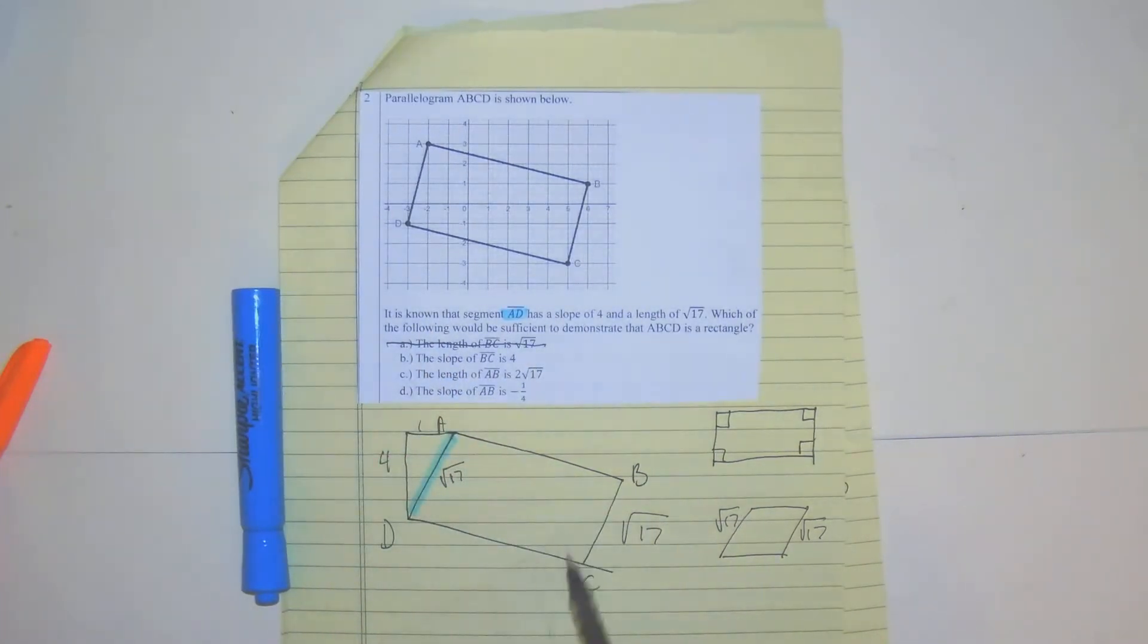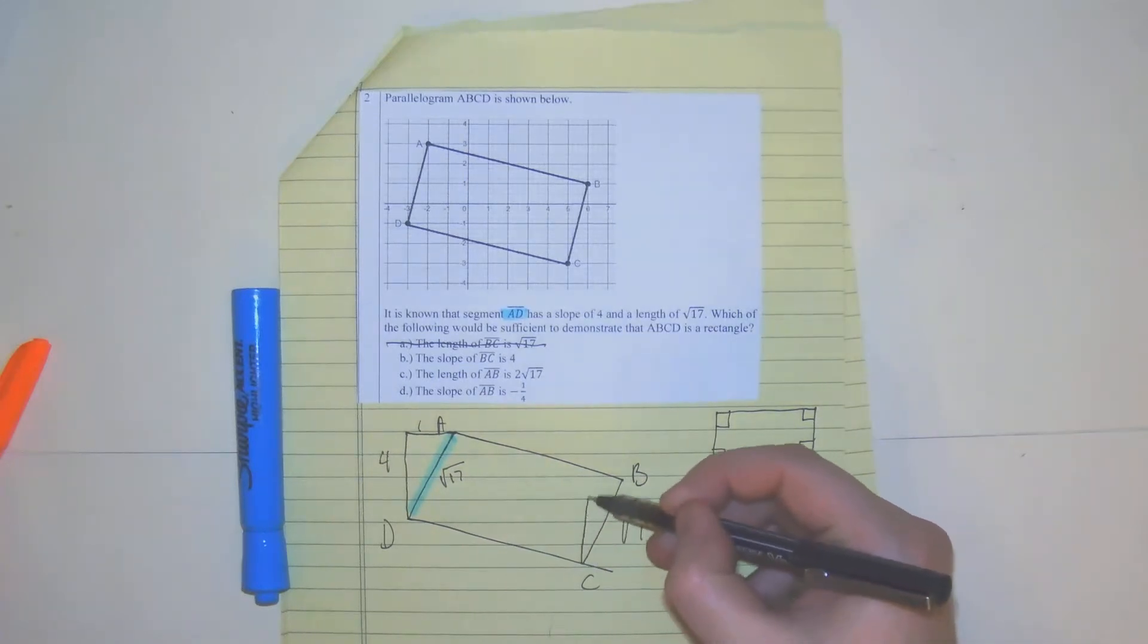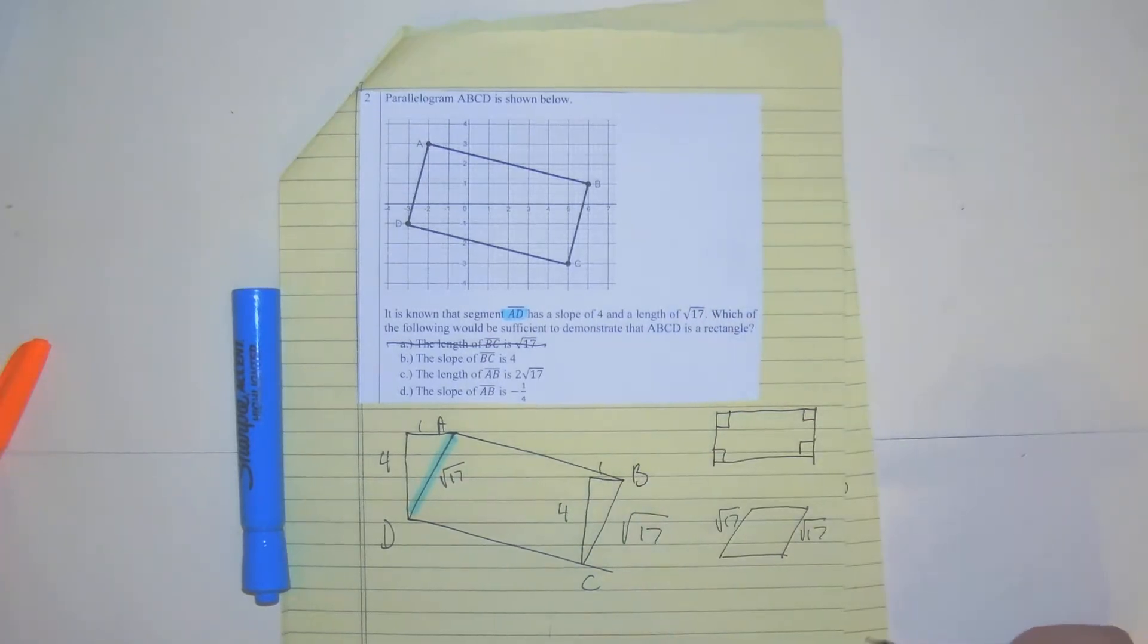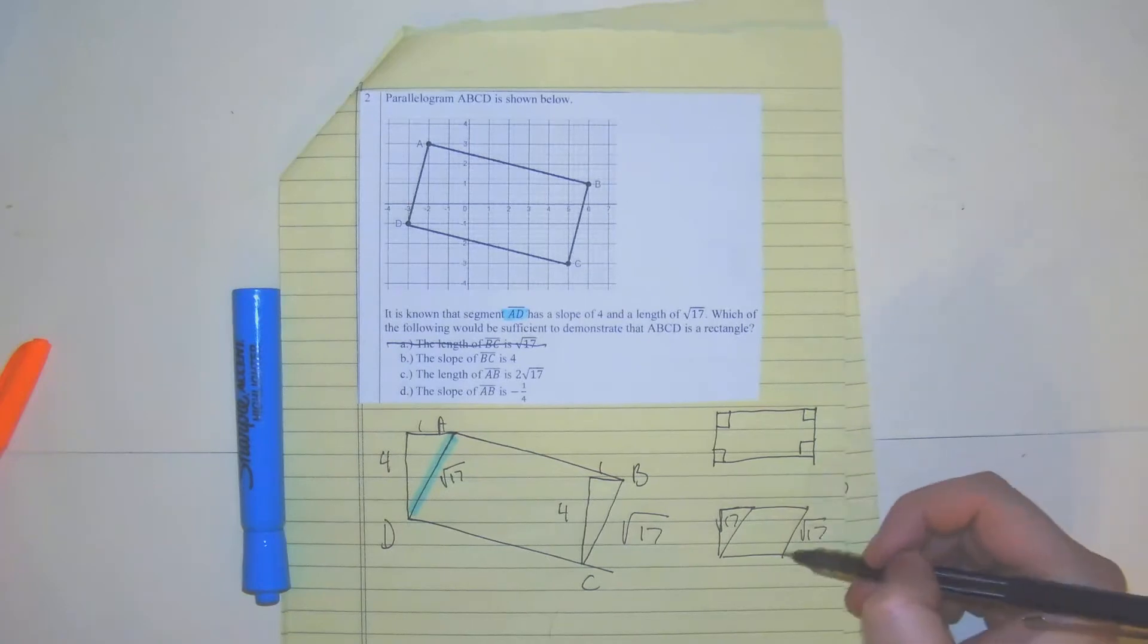So A is not right. The slope of BC is four as well, so it goes up four over one. Well again, that follows the rule of a parallelogram.